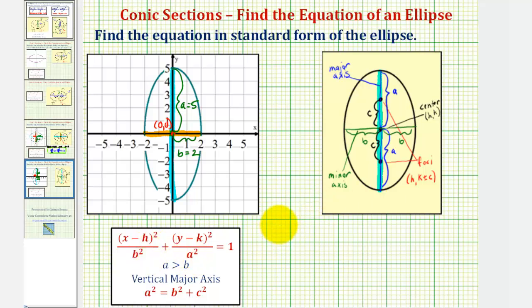So once again, because we know that the center, H comma K, is at the origin, we know H is zero and K is zero. We also know A equals five and B equals two.